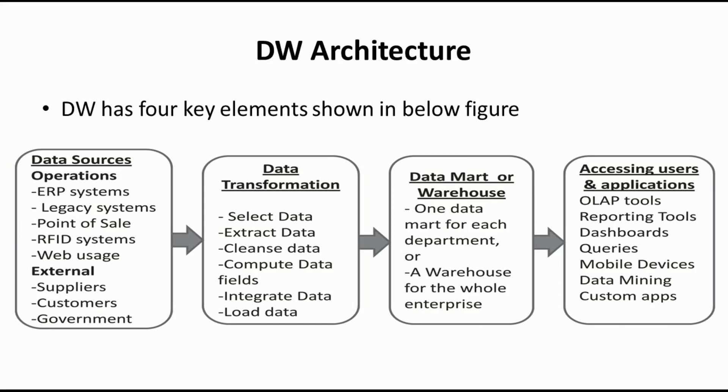External data sources include supplier data — such as supplier name, what was supplied, when, and the cost. Customer-related data includes customer name, email, mobile number, what they bought or sold, and product cost. The last kind is government-related data, where government laws and rules enforced on the organization are captured. These are all the data sources through which data is collected into an organization.